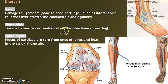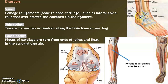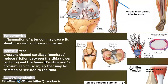Sprain — that is ligaments. Calcaneal fibular is a good name because calcaneal is the heel bone and the fibula is on the lateral side of the leg. This is when you roll your foot laterally — it's a very common sprain. Shin splints involve muscles along the tibia, the lower bone of the leg. Loose bodies occur when torn cartilage floats around in a synovial joint.